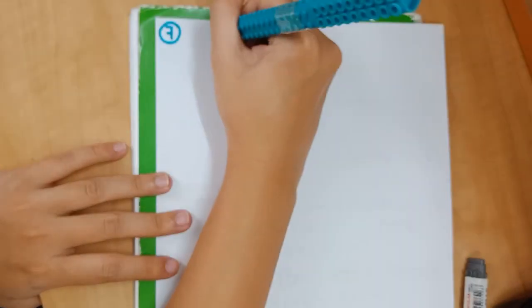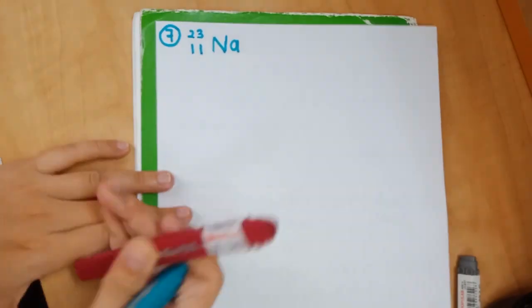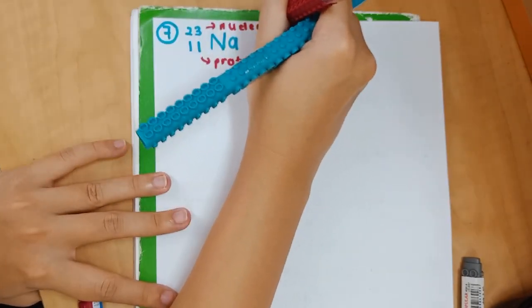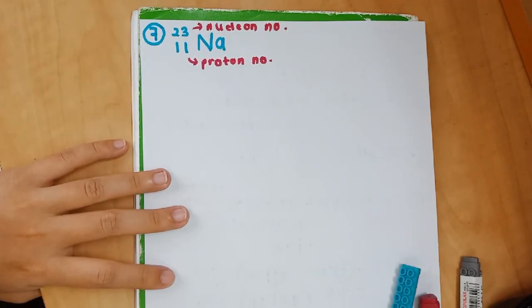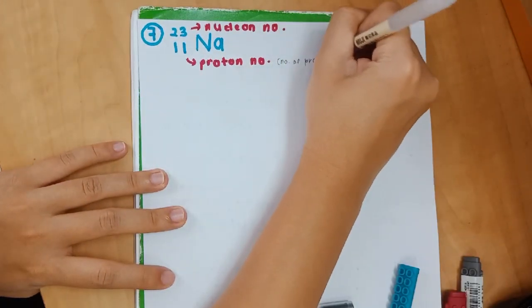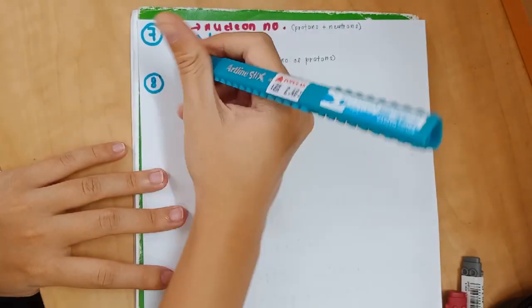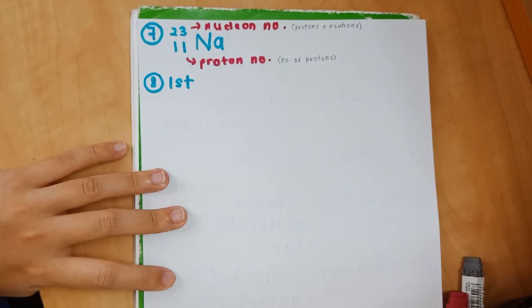Number seven is the symbol of an element. I use sodium as an example. The number at the bottom is known as the proton number, and the number on top is the nucleon number. Nucleon number is the combination of number of protons and number of neutrons, while proton number is simply the number of protons.